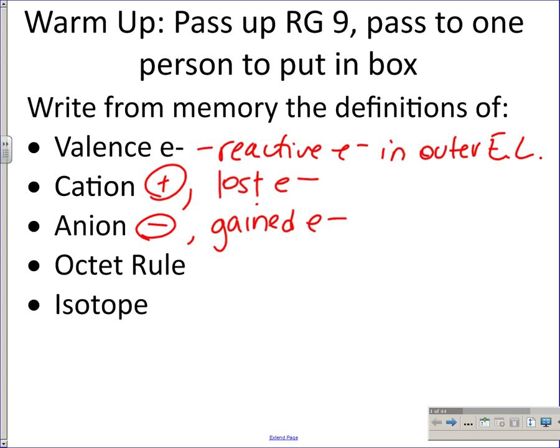The octet rule — we've talked about having noble gas electron configuration, but we haven't actually talked about the rule. This unit, we're going to talk about the octet rule as something that all items want to attain: eight electrons wanted in their valence energy level. This is going to allow them to act like a noble gas, which is the most stable arrangement of electrons.